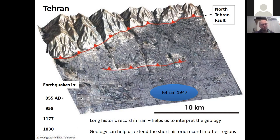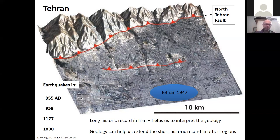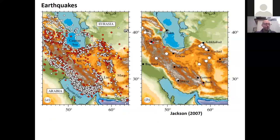By learning about the geology of earthquakes in areas with long historical records, we can extend the record to other regions. We can take lessons learned from a place like Tehran or elsewhere in Iran and apply them to other parts of Central Asia with shorter historical records. By looking in many different places simultaneously we build up a more continuous and better appreciation of earthquake history overall.